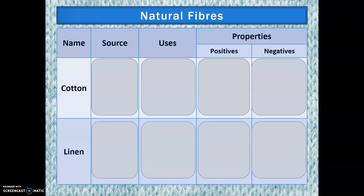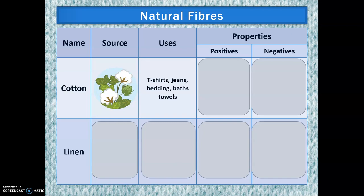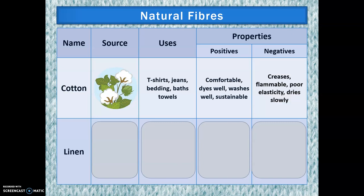Next we have our two plant-based fibres. Cotton comes from the cotton plant — those fluffy bits at the top — and is used for t-shirts, bedding, bath towels and jeans. It is very comfortable, dyes well, washes well and is sustainable. However, it does crease somewhat, is somewhat flammable, doesn't have great elasticity, and dries quite slowly.